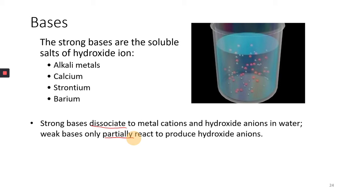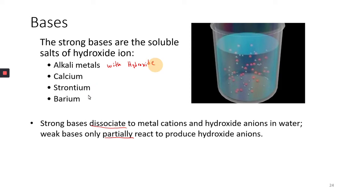There aren't too many strong bases. Your strong bases are soluble salts of hydroxide ions — if you have an alkali metal bonded with hydroxide, or calcium hydroxide, strontium hydroxide, or barium hydroxide. Remember, your alkali metals are your Group 1 metals.